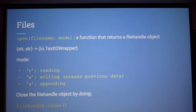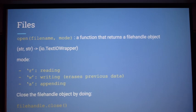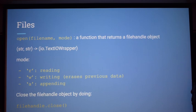As for files, there are three different ways you can open a file. You open a file name — a string — with a mode. If you don't provide a mode, by default it opens in read mode. You can also provide R, W, or A, which corresponds to read, write, or append.